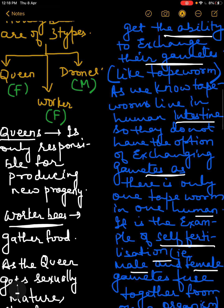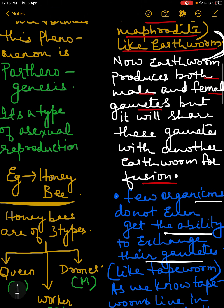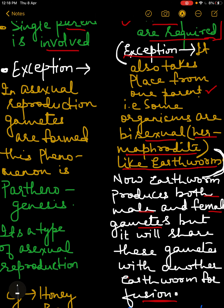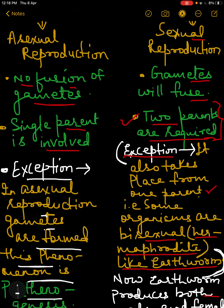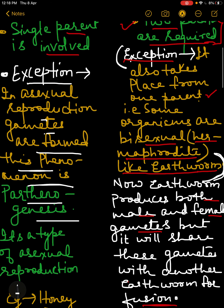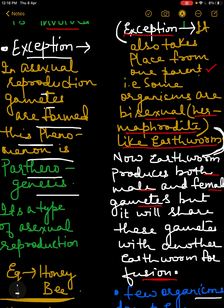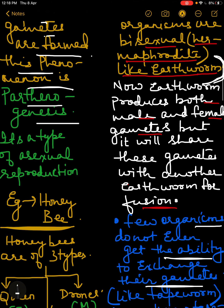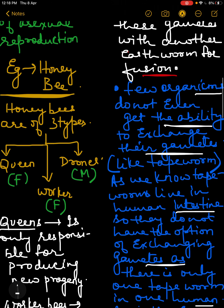Now let me discuss some exceptions about asexual reproduction. As an exception, in asexual reproduction gametes are formed — this phenomenon is called parthenogenesis. Remember, asexual reproduction is a type where there is no fusion of gametes, but in parthenogenesis gametes are formed.